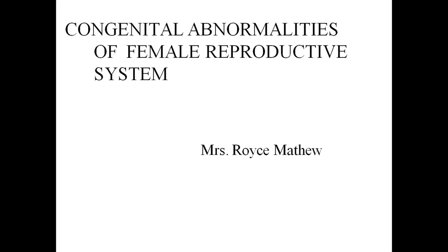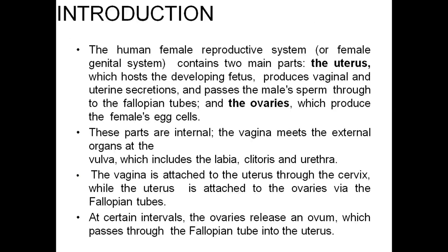Good morning students. Today's class we will see about the congenital abnormalities of the female reproductive system. The human female reproductive system contains two major parts: the uterus, which hosts the developing fetus, produces vaginal and uterine secretions, and passes male sperm through the fallopian tubes; and the ovaries, which produce female eggs. These parts are internal. The vagina meets the external origins and the vulva, which includes the labia, clitoris, and urethra. The vagina is attached to the uterus via the cervix, while the uterus is attached to the ovaries via fallopian tubes.